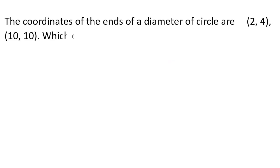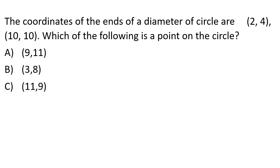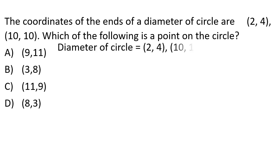The coordinates of the ends of a diameter of a circle are (2, 4) and (10, 10). Which of the following is a point on the circle? The center is the midpoint of the diameter. The center x-coordinate is (2+10)/2 = 6, and the y-coordinate is (4+10)/2 = 7. So the center is (6, 7).